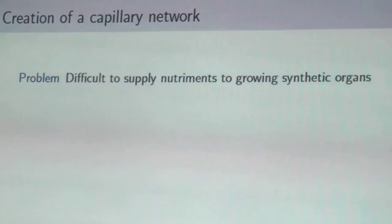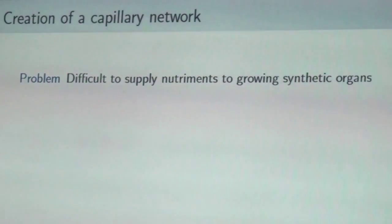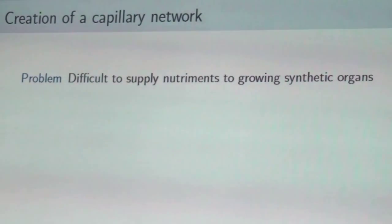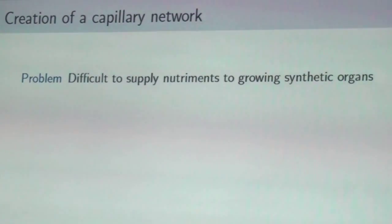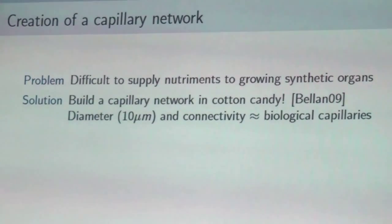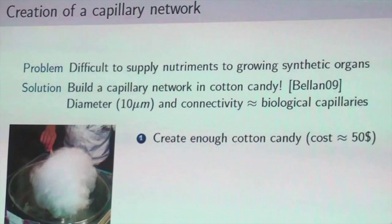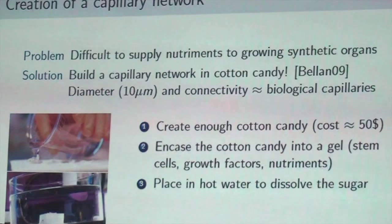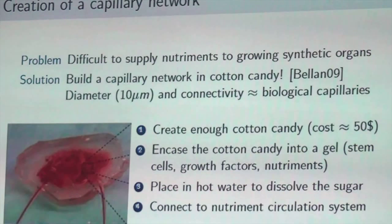Another problem is that we don't really know how to supply nutrients to an organ we are trying to grow. For thin organs like a bladder it's possible, but for bulky ones we get necrosis at the center because nutrients and blood can't reach inside. The solution found uses cotton candy — the sugar fibers have approximately the same diameter and connectivity as biological capillaries. You encase the cotton candy in gel containing stem cells and growth factors, then dissolve the sugar in hot water, creating open channels. When connected to a nutrient supply, you have a capillary network containing the growing organ.